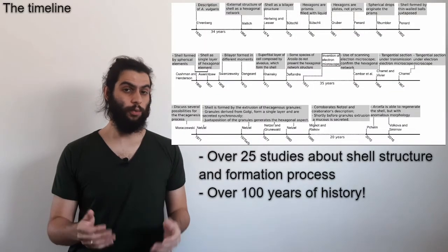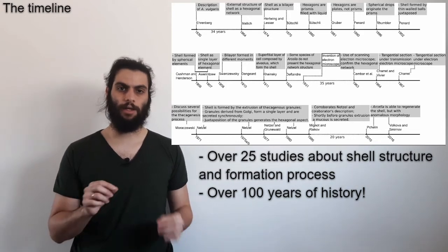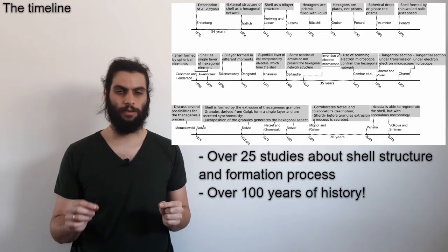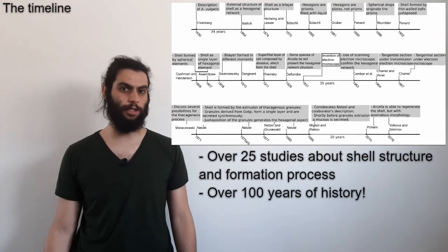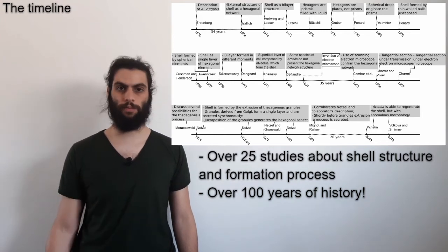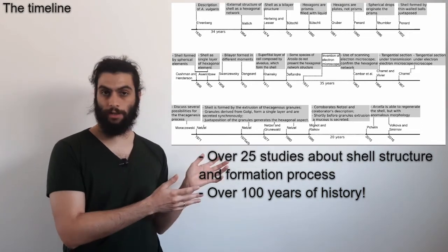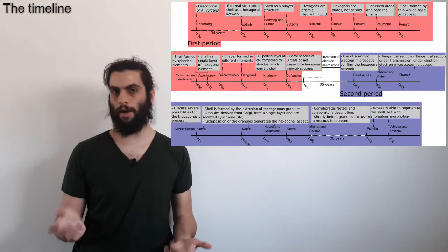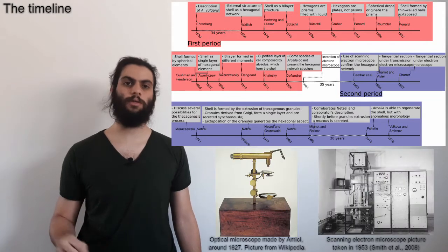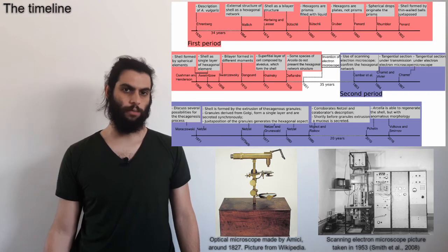Let's take a look at this timeline. Up to date, we have over 25 studies in a period of more than 100 years that describe the structure of Arcella shell and its formation process. To facilitate, we can look at this timeline as two different periods: the first one enabled by optical microscopy, and the second one enabled by electron microscopy.